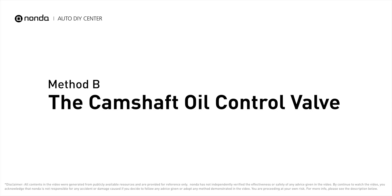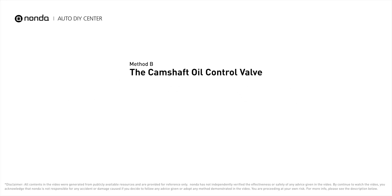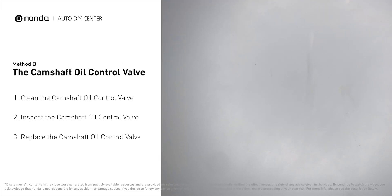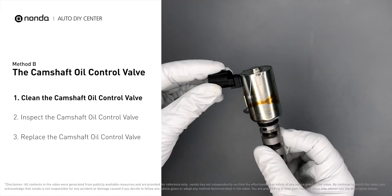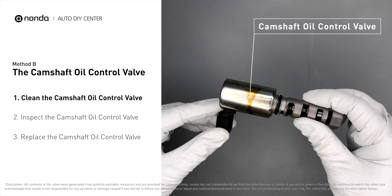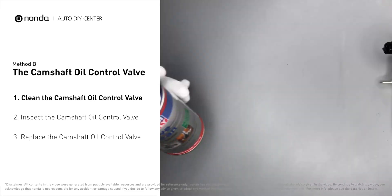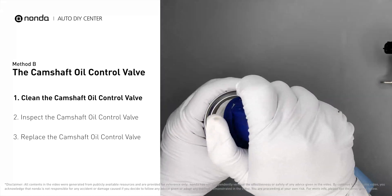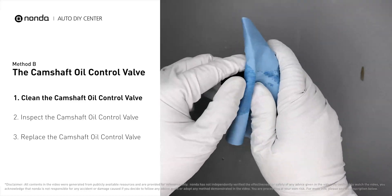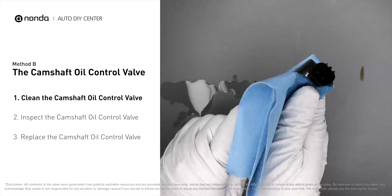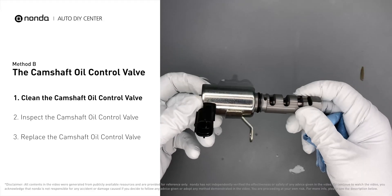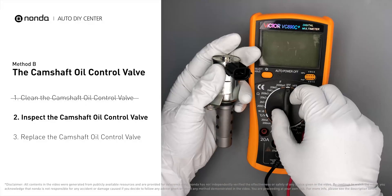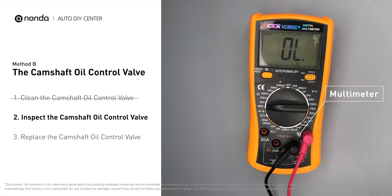Method B – The Camshaft Oil Control Valve. First, carefully remove the camshaft oil control valve from the engine. Use a valve cleaner to clean the camshaft oil control valve. Then use a multimeter to proceed with a test on the camshaft oil control valve.